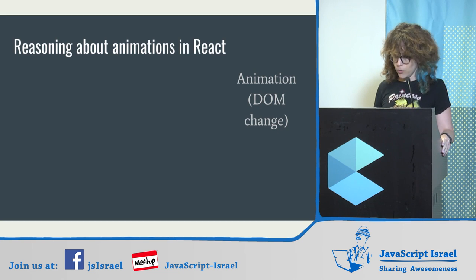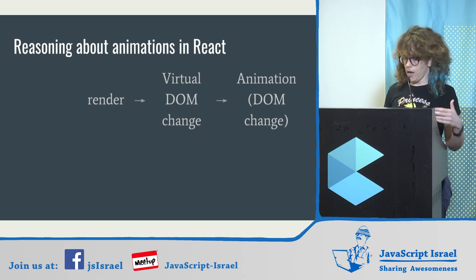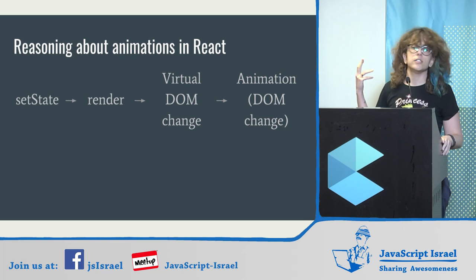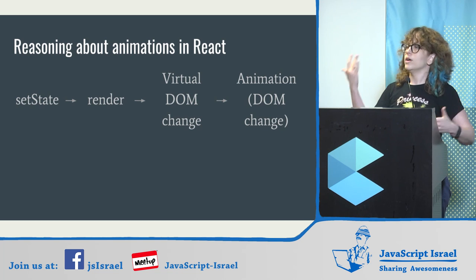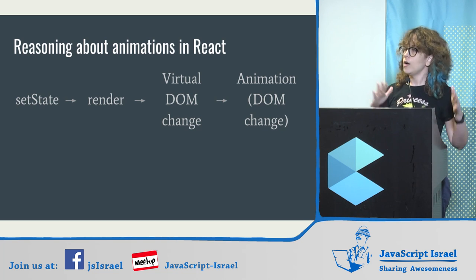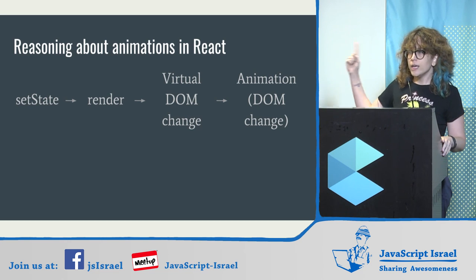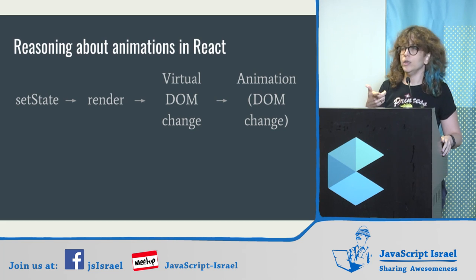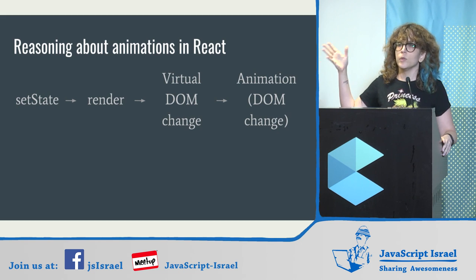First, let's remind ourselves how we change the DOM in React. We have to go through the virtual DOM — we change it by calling the component's render method with different data, which we do by calling setState. So the basic flow is: setState calls the render method, the render method builds the virtual DOM, and React calculates the difference.